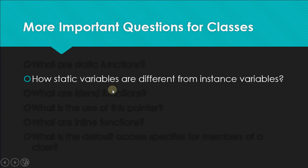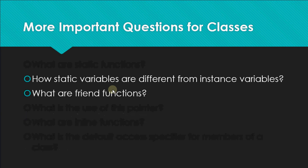The main difference is that for instance variables, memory is allocated again and again whenever an object of the class is created, whereas for static variables, memory is allocated only once and is shared by all objects of the class.